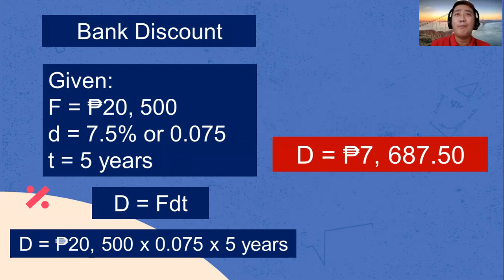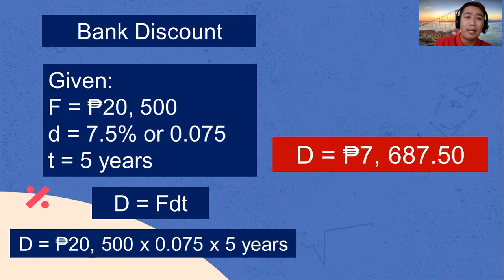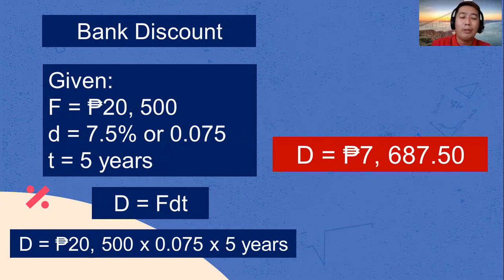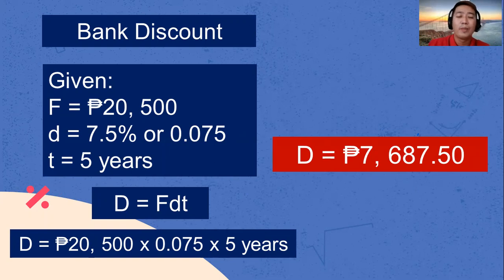In terms of interest, that is the amount of money being added to the principal amount. In contrast, bank discount is the amount that is being subtracted from the maturity value. That is bank discount.